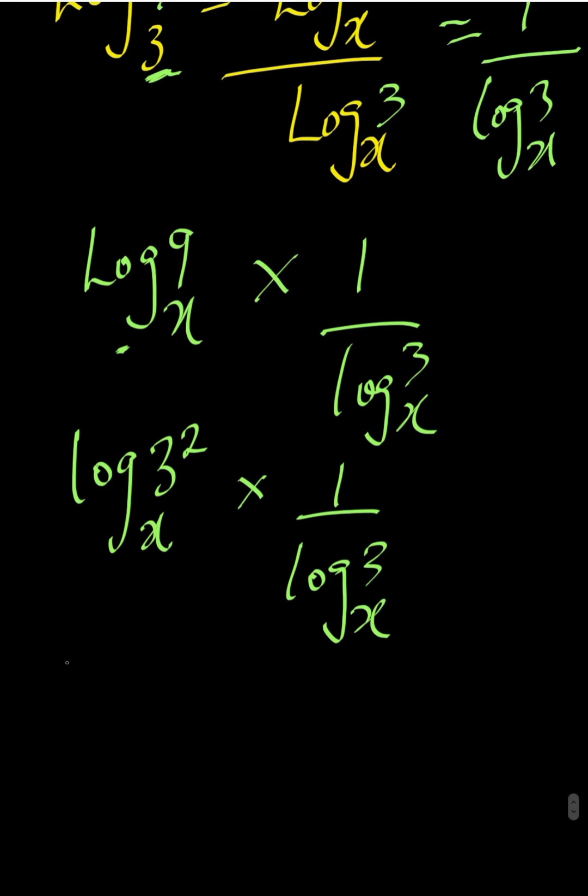The 2 can come to the back. We have 2 log 3 base X multiplied by 1 over log 3 base X.